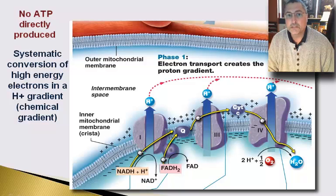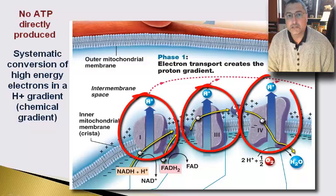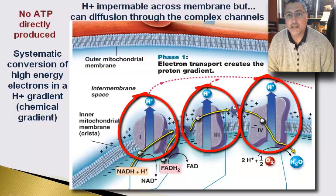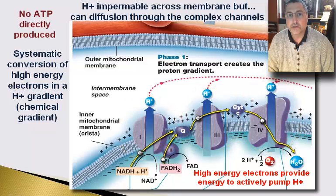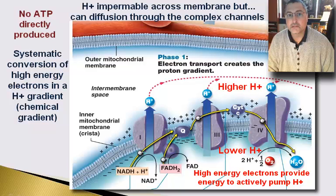Let's back up and think about that again. The electrons were being offloaded to complexes numbered one through four. We saw that complexes one, three, and four actually had within them channel proteins specific for hydrogen ions, appreciating that hydrogens cannot move across the phospholipid membrane unless they have a pore. The role of the high energy electrons was to physically pump hydrogen ions through these complexes from the matrix into the inner membranal space.